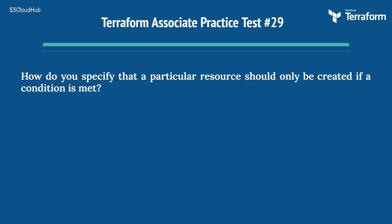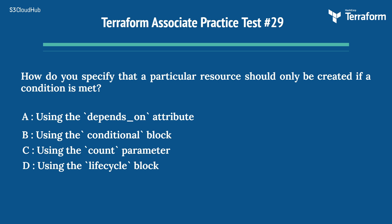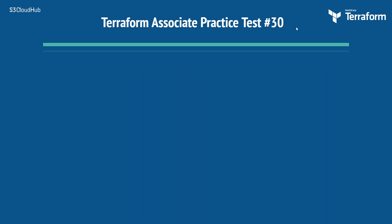The twenty-ninth question: how do you specify that a particular resource should only be created if a condition is met? Options are: A) using the depends_on attribute, B) using the conditional block, C) using the count parameter, D) using the lifecycle block. The right answer is Option C, using the count parameter. The count parameter can be used to conditionally create resources.